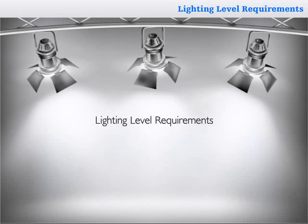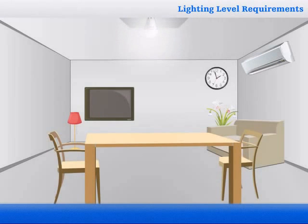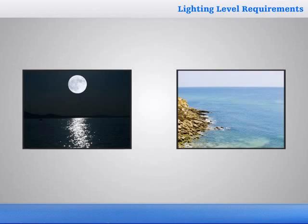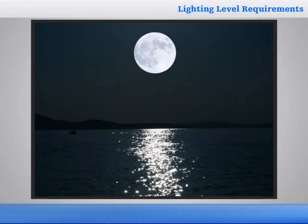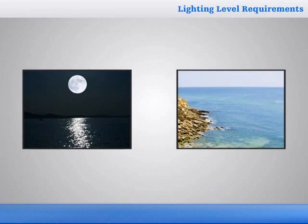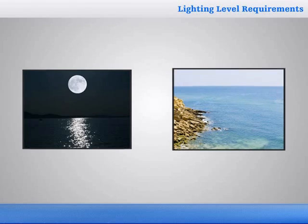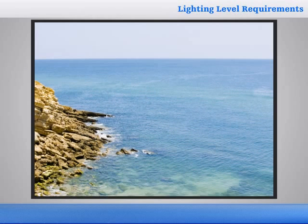In this nugget, we will learn the basic concept of lighting level requirements. Lighting level is used to specify the amount of light present. The natural illuminances can range from a few tenths of a lux under the moonlight, in which human perception is just possible, to as high as 100,000 lux in the middle of summer out in the open.